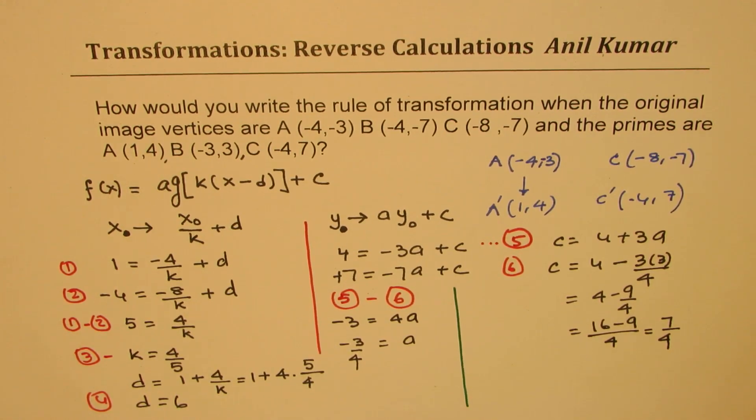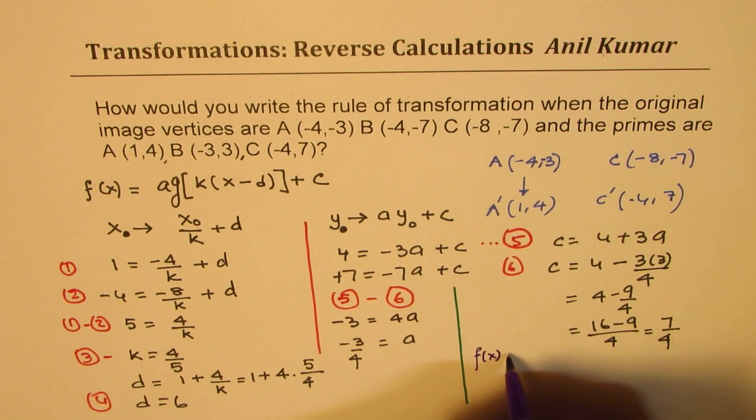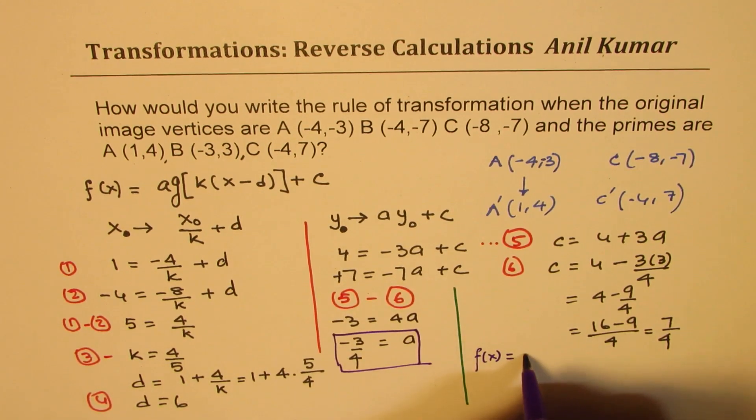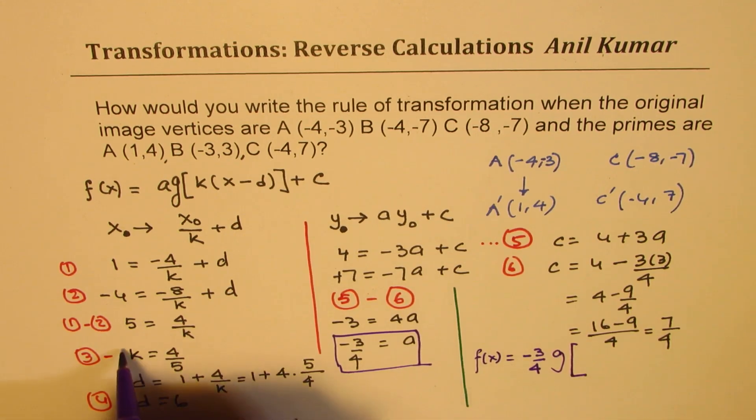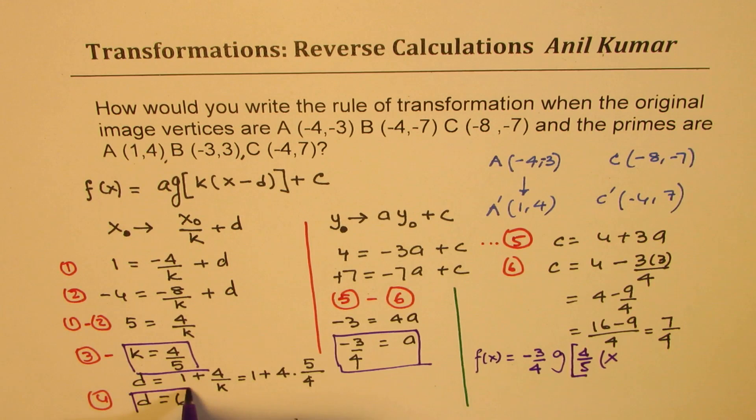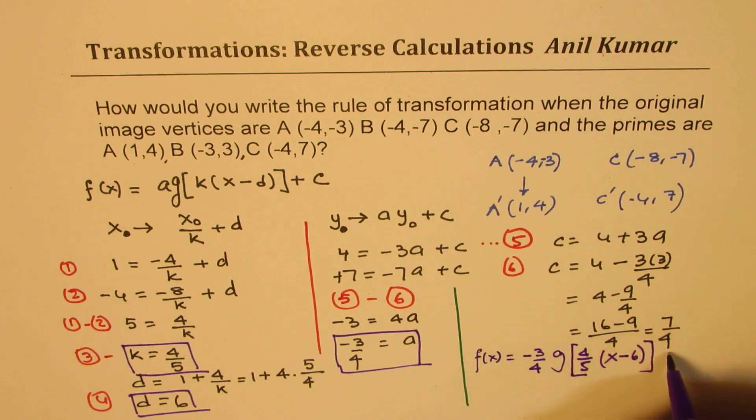So the transform function—finally we could now write that the transform function f(x) is equal to: a value is -3/4, so we can write -3/4 times g of—the k value is 4/5—times (x - d, which is 6), plus c, which is 7/4.